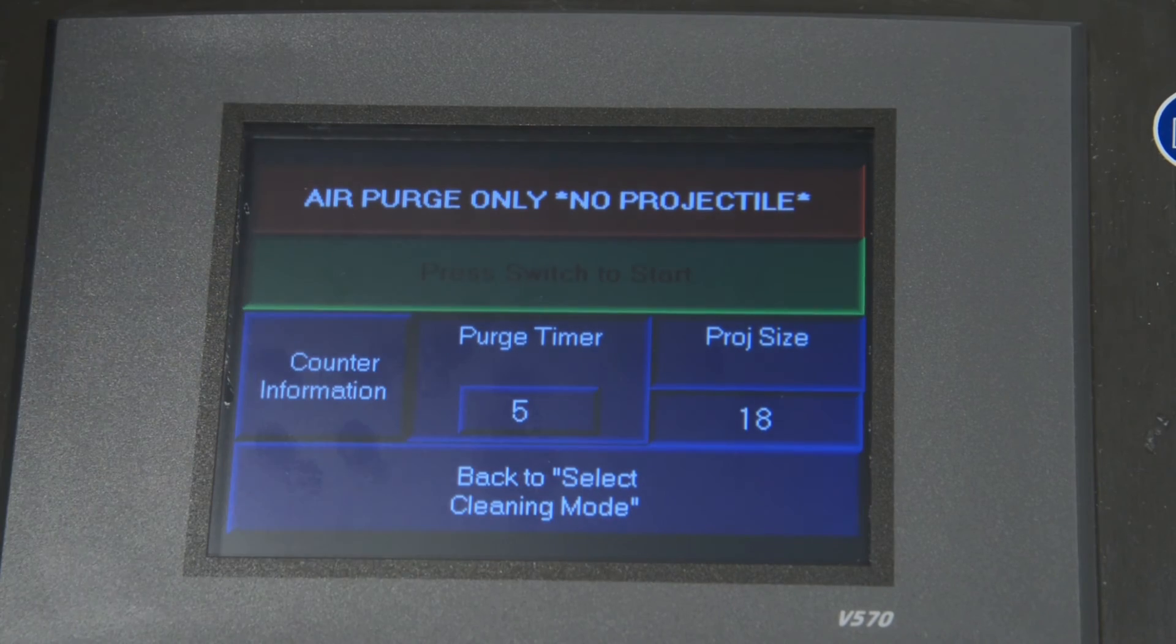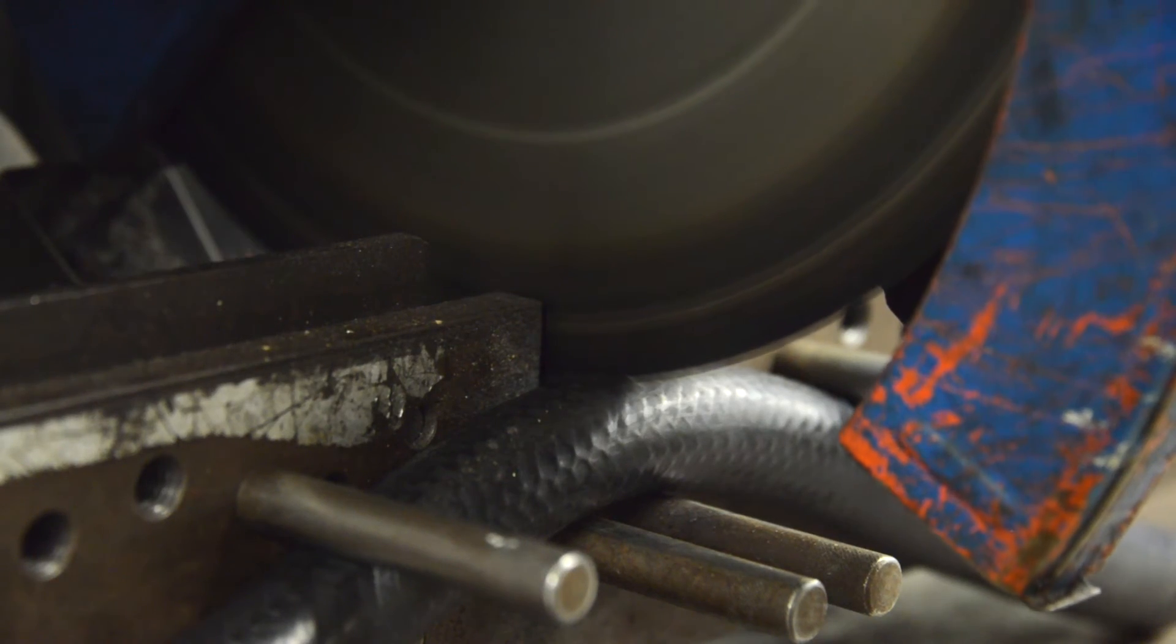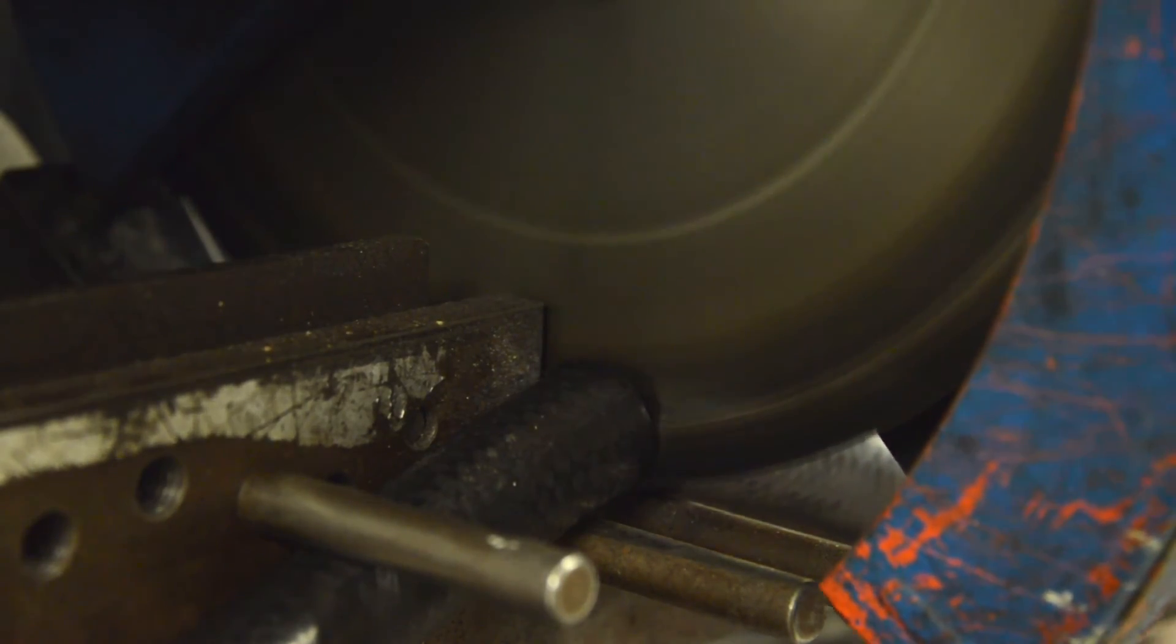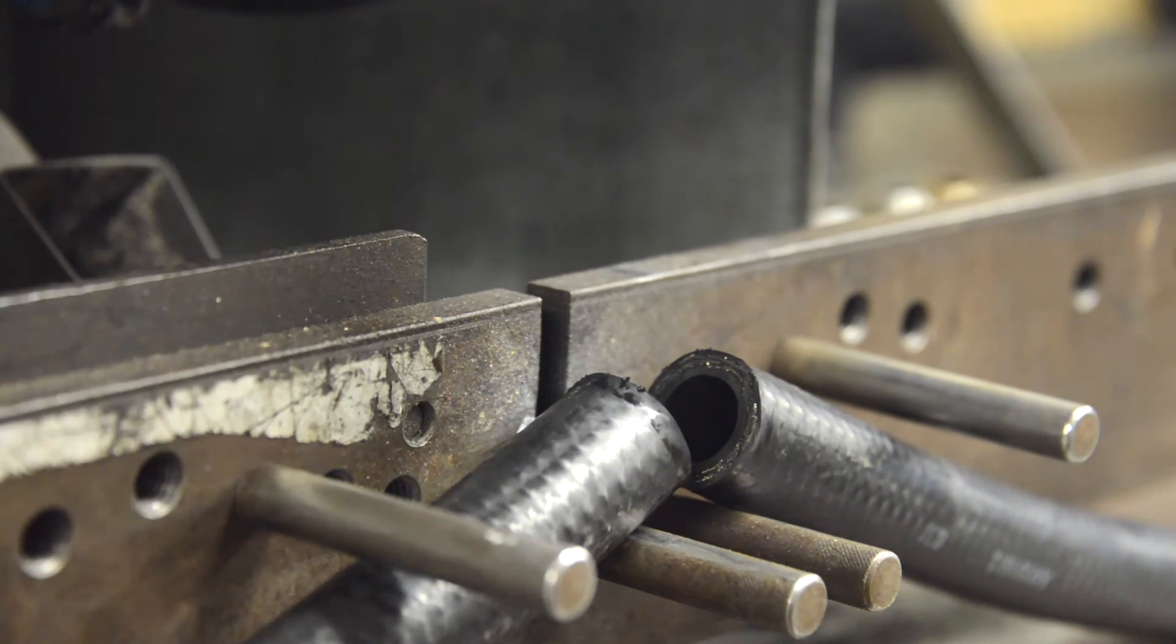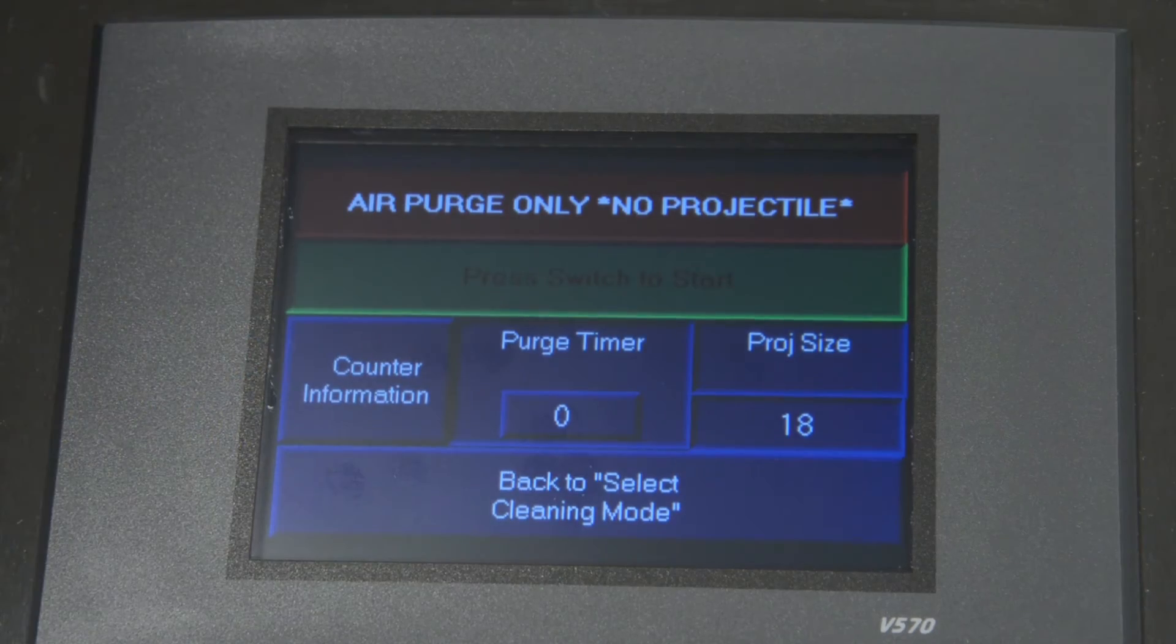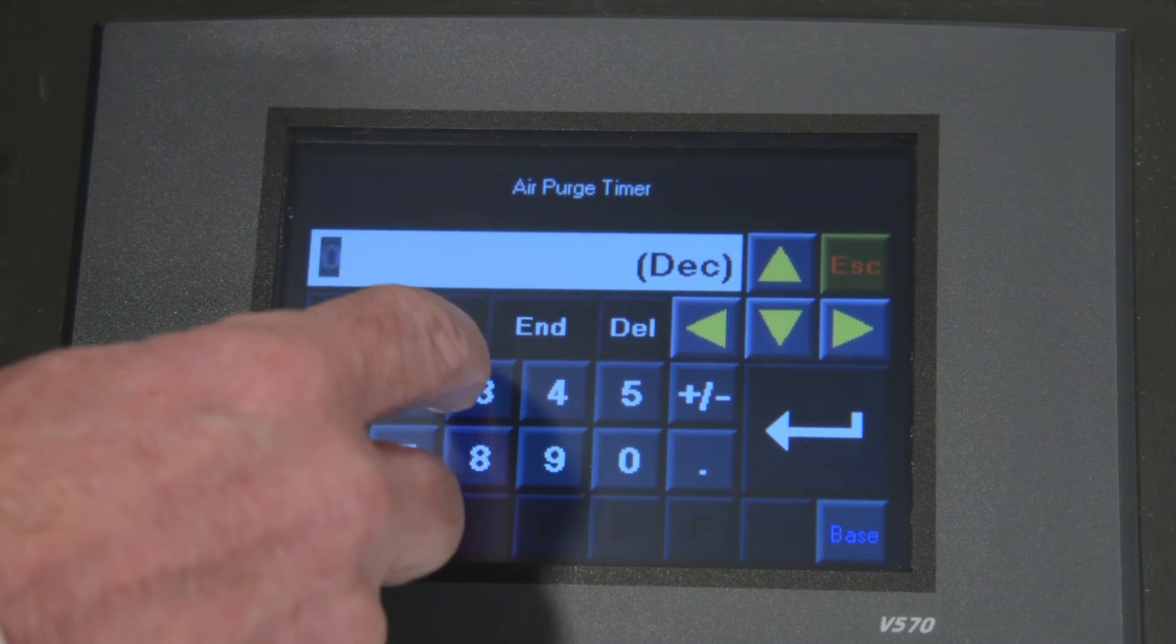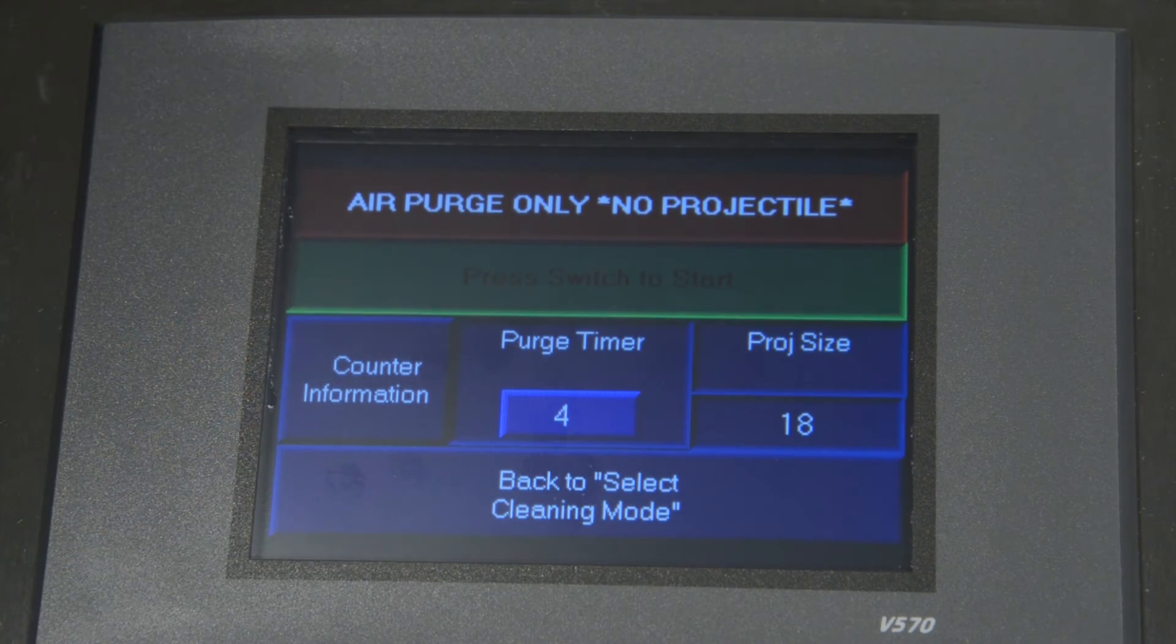The Air Purge plus one or two projectile cleaning modes are used when large particles of contamination are generated from internally or externally skiving of hoses or when cutting hoses with an abrasive wheel type blade. When using the Air Purge cleaning modes, it is important to set the Air Purge timer. We strongly recommend that the timer be set at no less than three seconds.